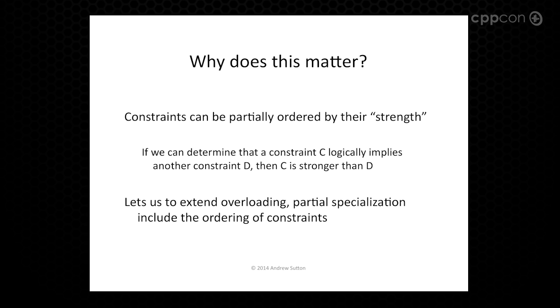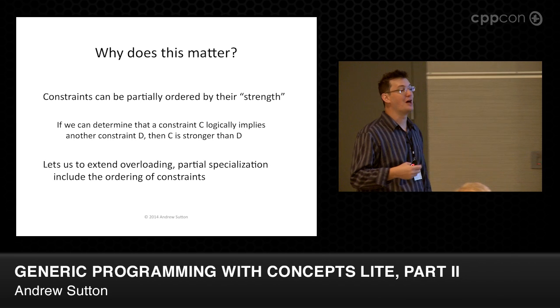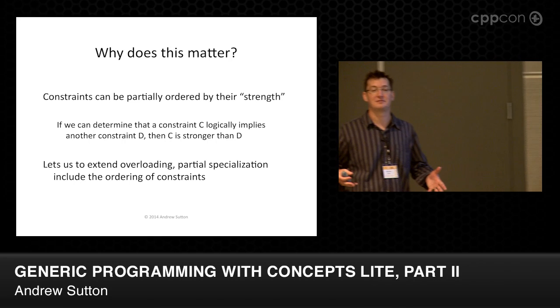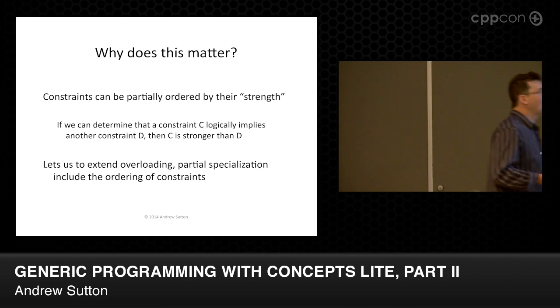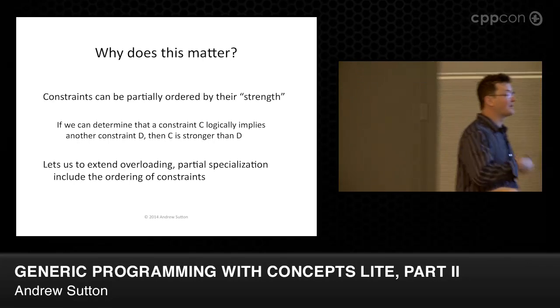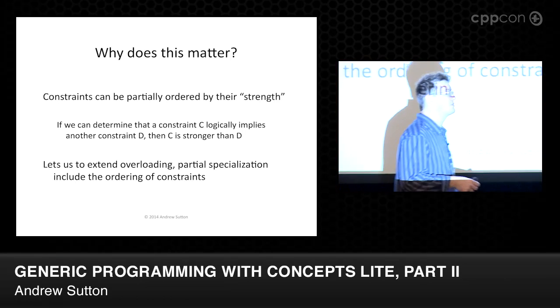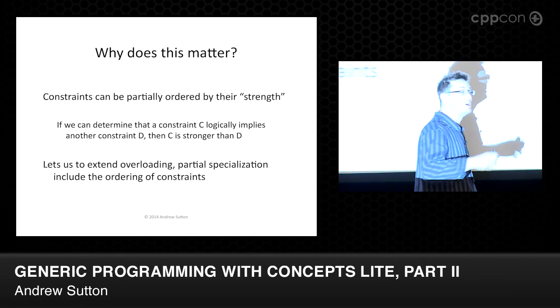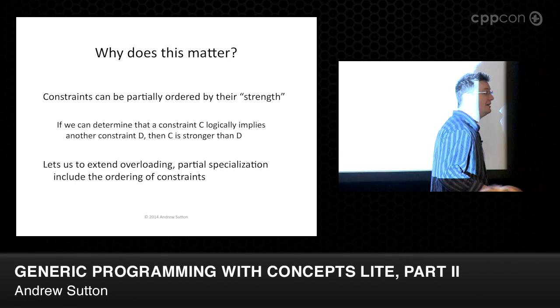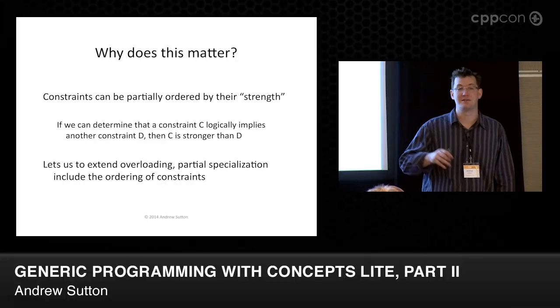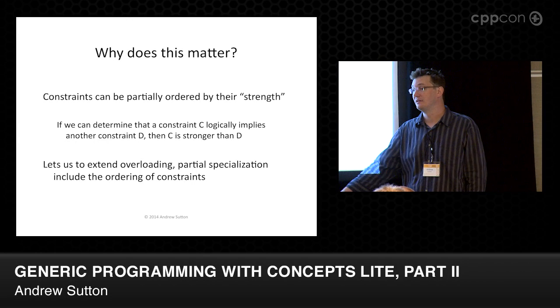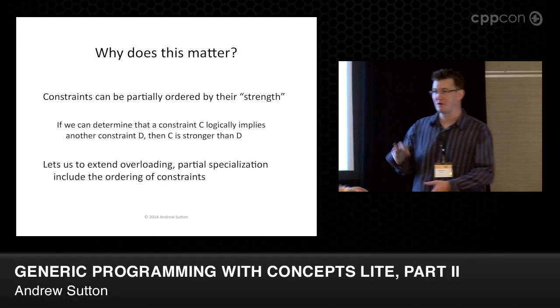The rule we use to do this is actually based in logic, not set theory. If the compiler can determine that whenever some constraint C is true it can also determine that D is true, then C is a stronger constraint than D — or C refines D. If you go get Elements of Programming by Stepanov, that's exactly how he defines refinement: as a logical implication. An unconstrained template — just template<typename T> — is always less constrained than any other constrained template; it's the least constrained of all.